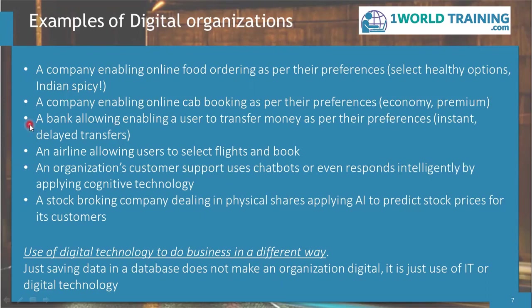A bank allowing and enabling a user to transfer money as part of their preferences — for example, instant transfer or delayed transfers. An airline allowing users to select flights and book tickets. An organization's customer support uses chatbots or responds intelligently by applying cognitive or human language recognition technology. A stockbroking company dealing in physical shares applying artificial intelligence to predict stock prices for its customers. These are some good examples of digital organizations.